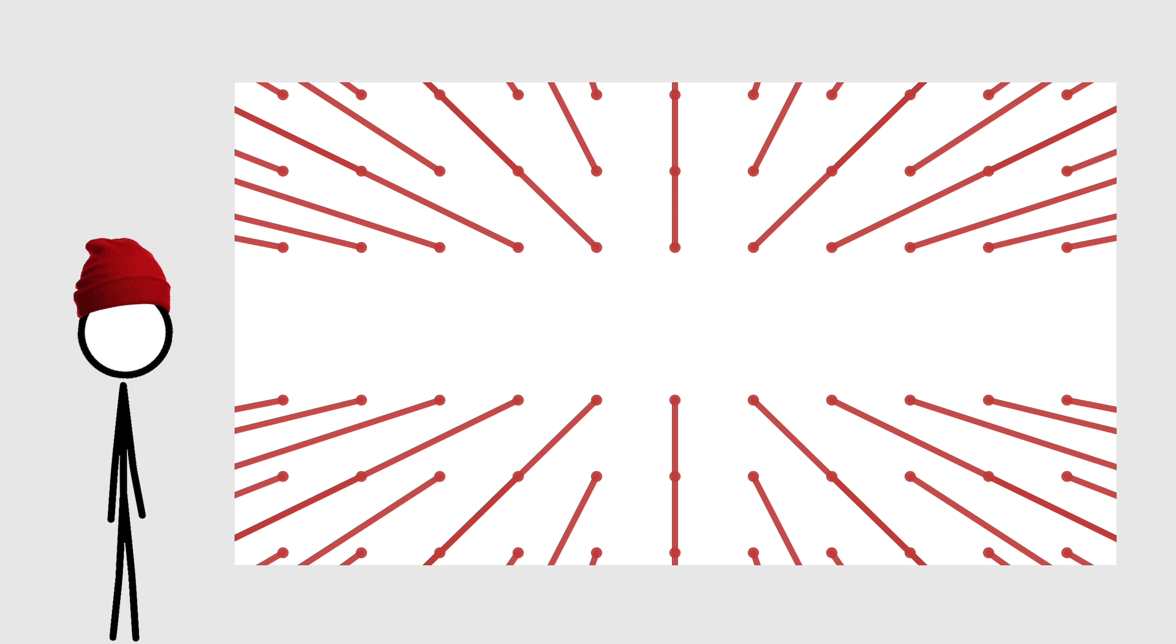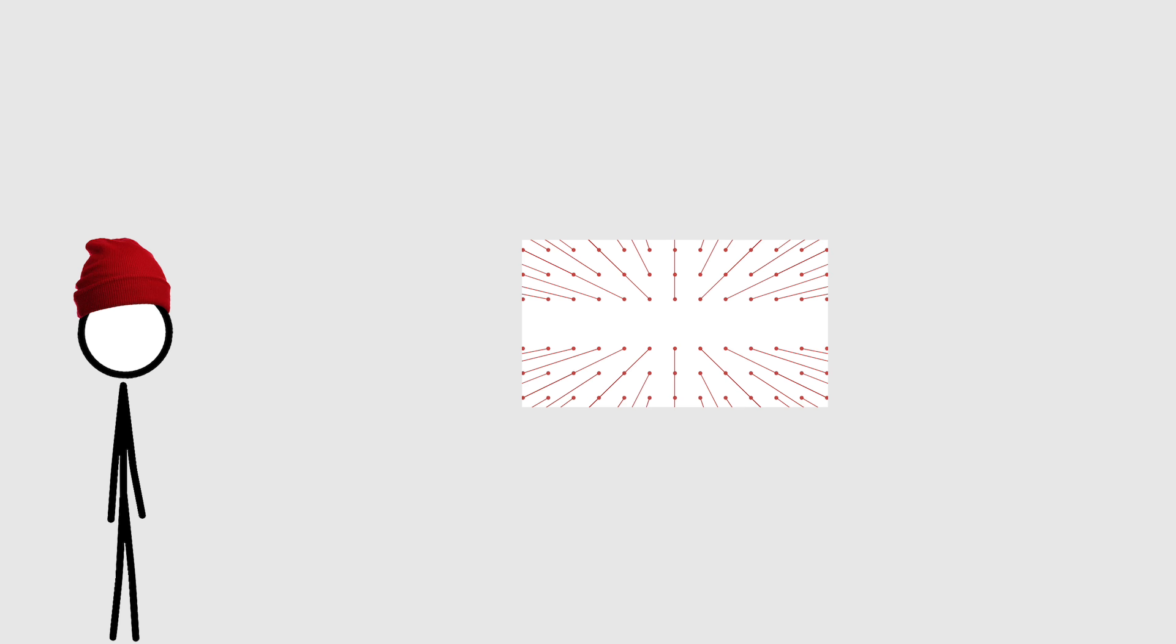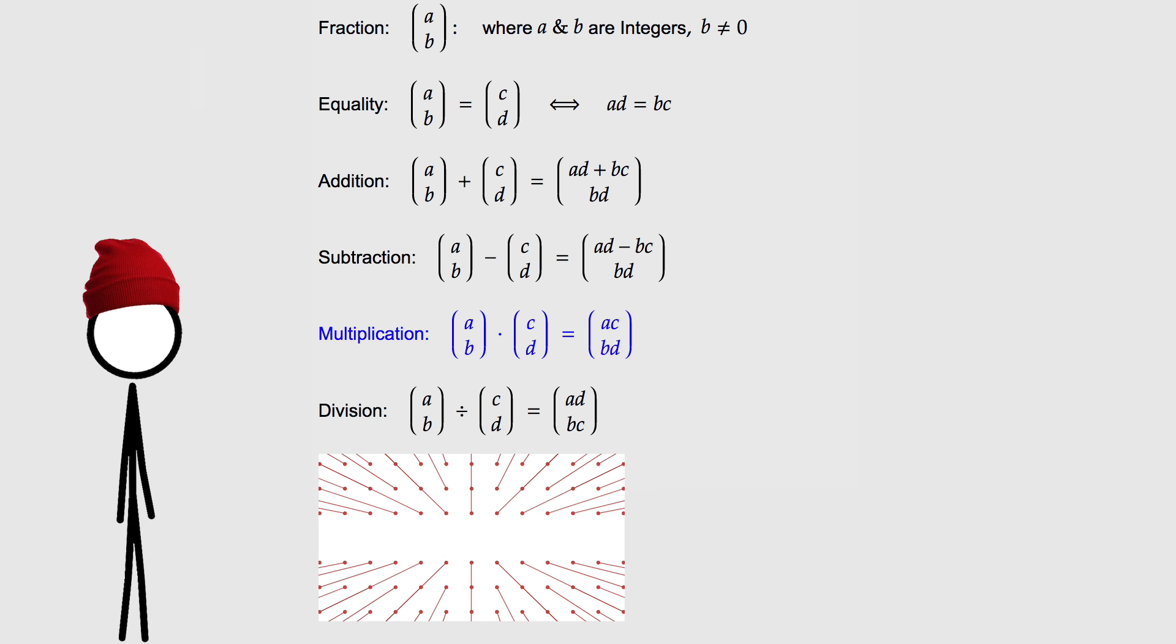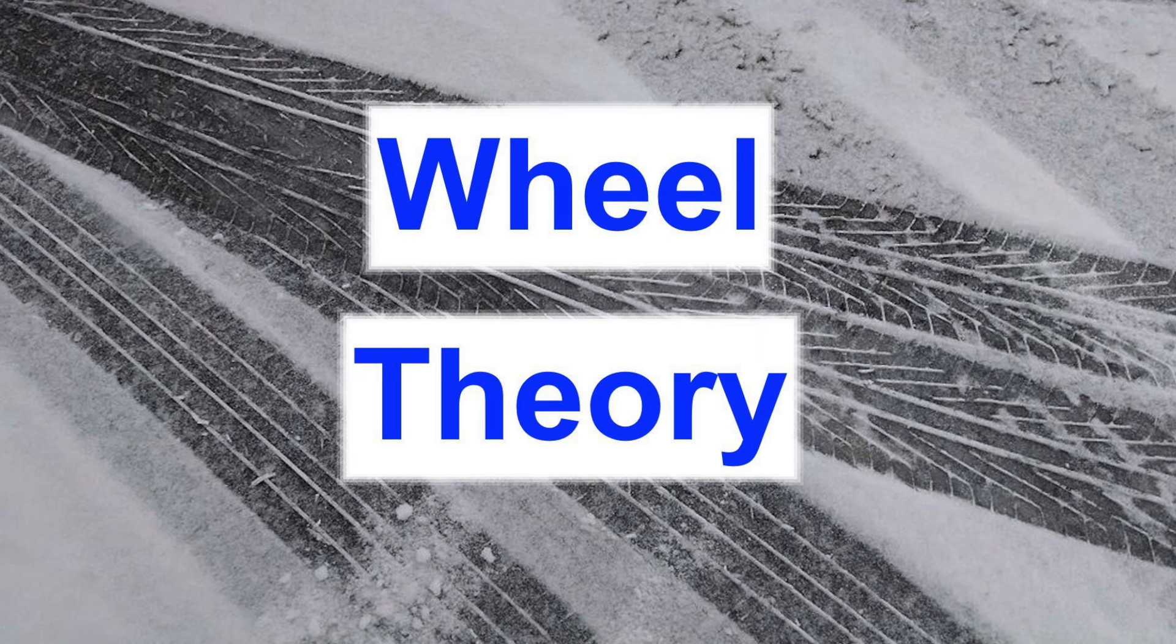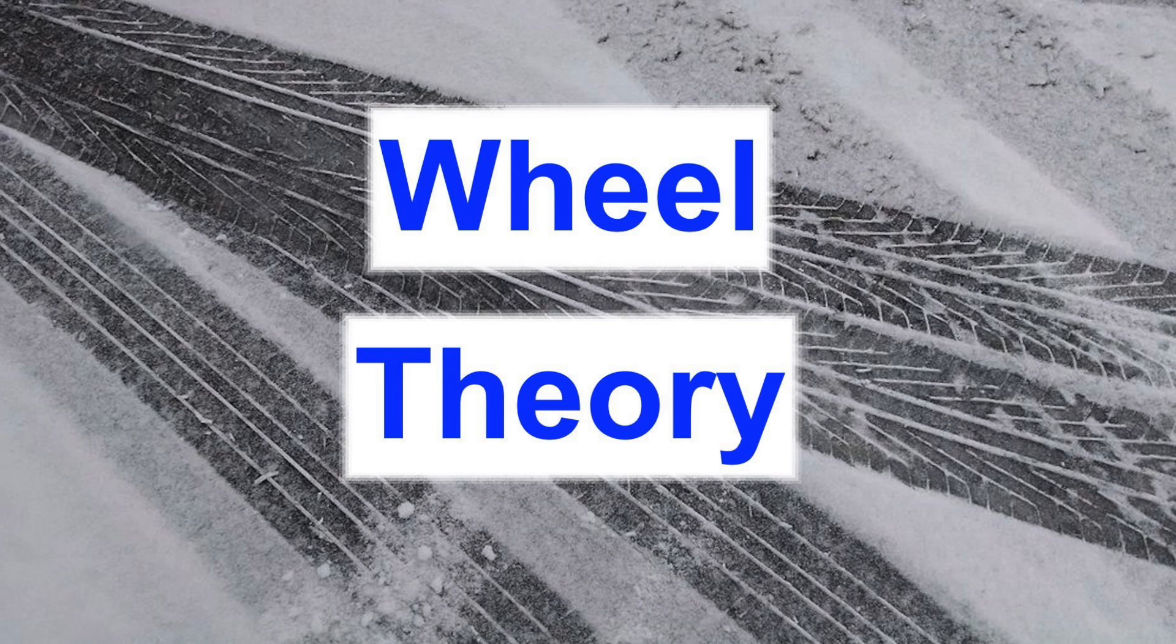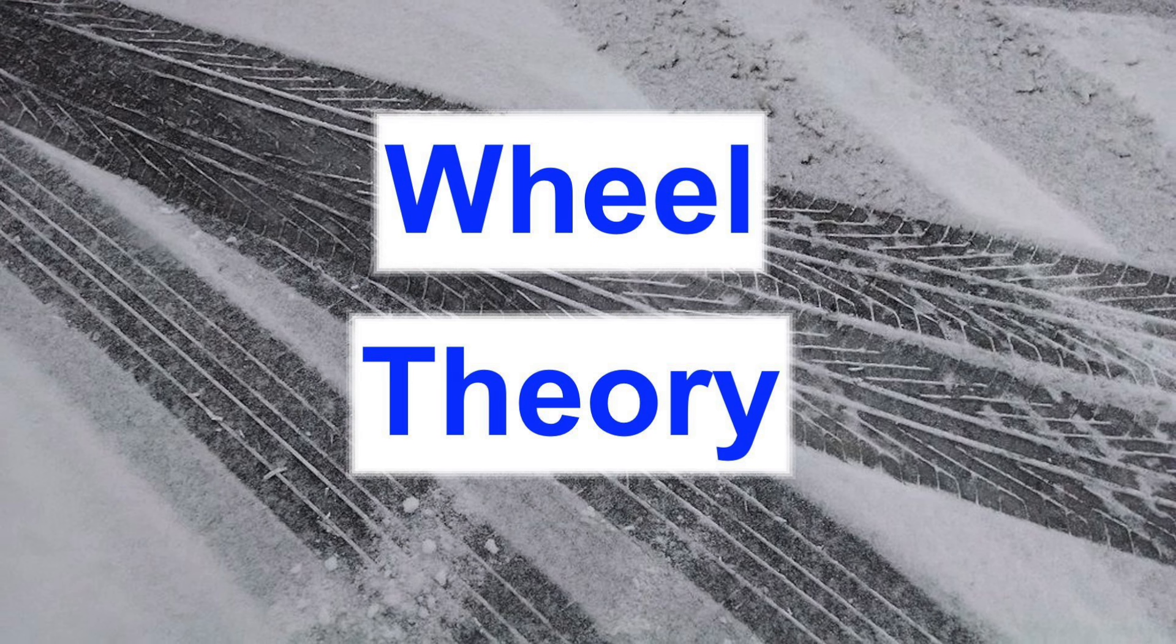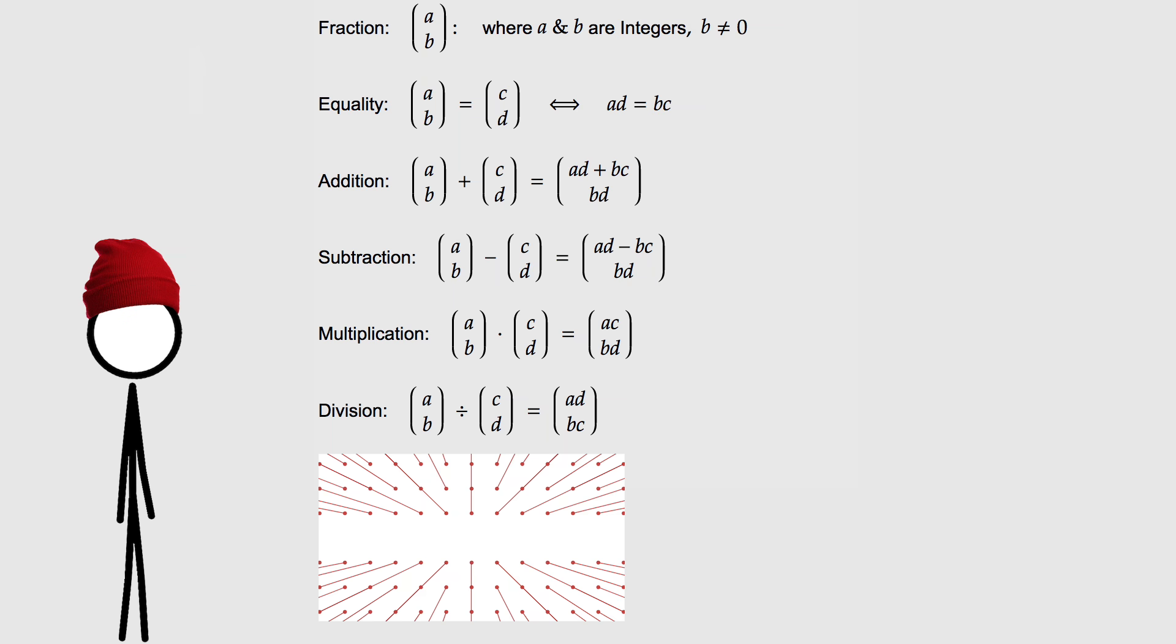We start with the empty Cartesian plane. Now we take the fraction 0, 1, and we plot this fraction at the point 0, 1. Next we do the fraction 0, 2, and we plot it at 0, 2. And then we do 0, 3, and 0, 4, and so on, and we plot all the other fractions and fill the entire plane with this giant lattice of fractions. Each point in this lattice corresponds to one of our fractions. But it's not that simple, because not all the fractions are different. Many of them are equal to each other.